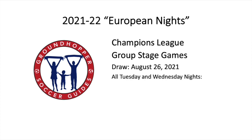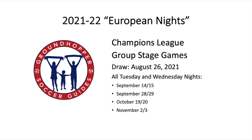All of these games will be on Tuesday and Wednesday nights. Everybody gets six group stage games. The match nights are: September 14th and 15th, September 28th and 29th, October 19th and 20th, November 2nd and 3rd, November 23rd and 24th, and December 7th and 8th. Those are all the group stage nights.